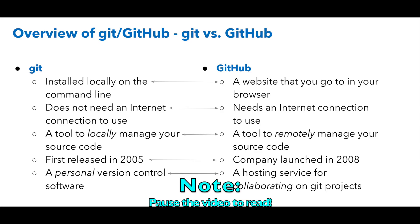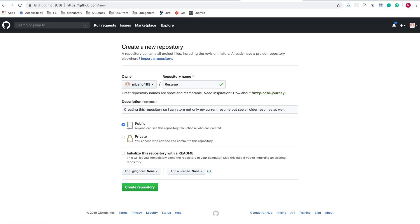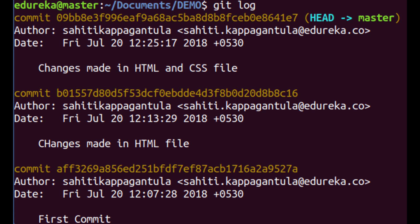The answer is no. Git is what you use on your laptop — on your local machine. GitHub is actually a website that you visit in your browser. With GitHub you need an internet connection in order to use it, however with Git you don't — you can use it all locally on your computer.